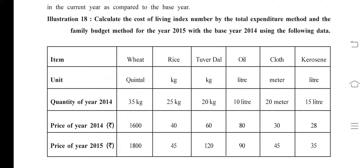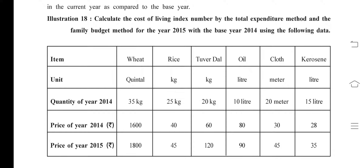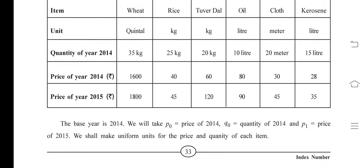Using the following data — items: wheat, rice, oil, clothes, kerosene. Units: quintal, kg, kg, liter, meter, and liter. Quantities for 2014: 35 kg, 25 kg, 20 kg, 10 liters, 20 meters, and 15 liters. We also have the prices for the years 2014 and 2015.